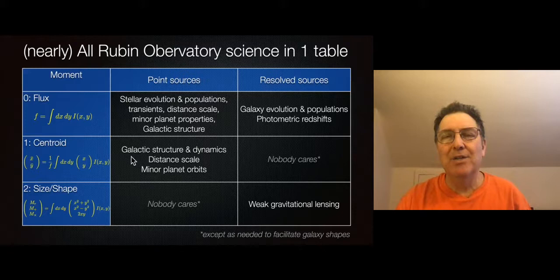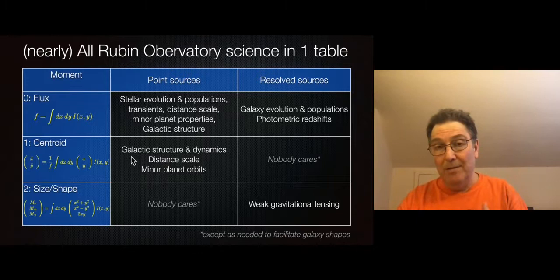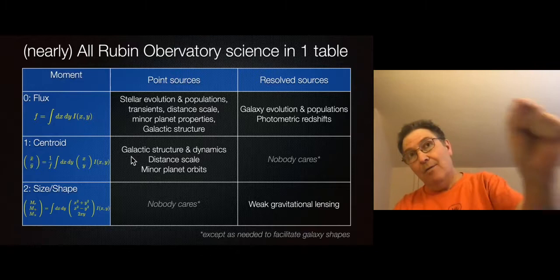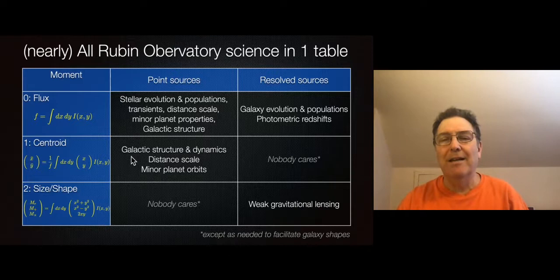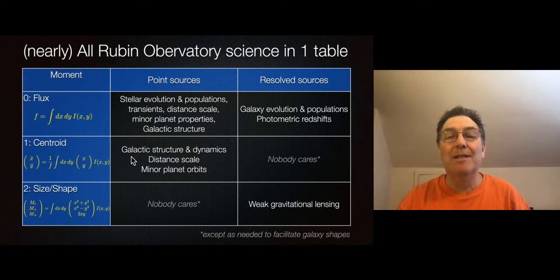We mostly care about how stellar positions change with time. Can we see the parallax motion from Earth's orbit? Parallax tells us stellar distances. We can also measure proper motion — the drift across the sky, treated as linear in time — which tells us the transverse velocity of stars. This is of huge interest for galactic structure and dynamics. For solar system astronomers, knowing a minor planet's positions to high accuracy lets you determine its orbit.